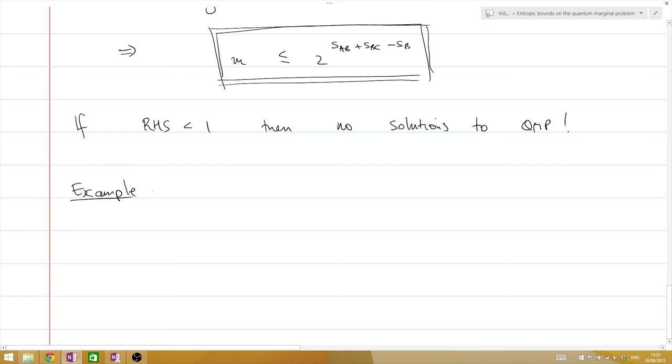Let's see this inequality in action by applying it to the example that we covered at the beginning. In the example we covered earlier, rho AB was a pure singlet state, as was rho BC. It's easy to compute the entropy of the pure singlet state, it's just 0. And the von Neumann entropy of the reduced state on subsystem B is completely mixed, and that's equal to 1. If we substitute these numbers into our inequality, then we get on the right-hand side the number half, which is strictly less than 1, and we confirm that there is indeed no solution.